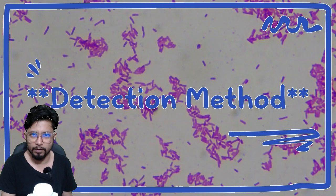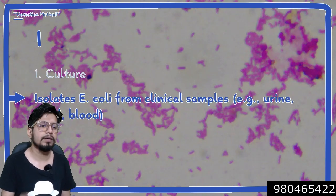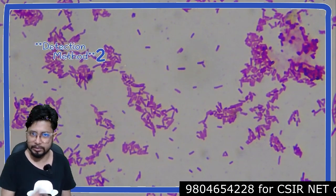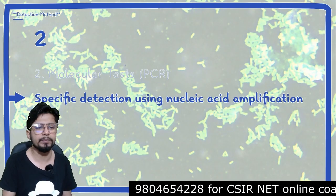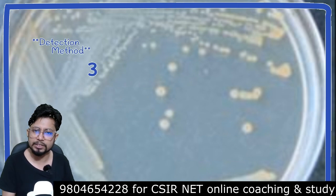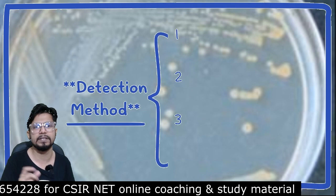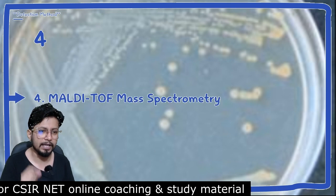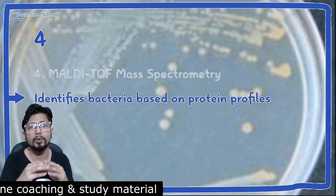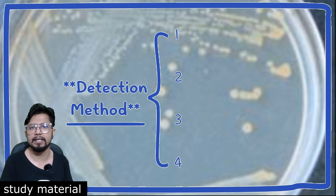There are four detection methods for E. coli. The first is the culture method, which isolates E. coli from clinical samples such as urine, stool, or blood. The second involves molecular techniques — PCR, or polymerase chain reaction, using nucleic acid amplification for specific detection. The third method is enzyme immunoassays, or EIAs, which detect specific E. coli antigens or the presence of toxins in the body. The fourth method is MALDI-TOF mass spectrometry, which identifies bacteria based on the protein profiles the bacteria release in the host cell. These are the four methods to detect E. coli in a host body.